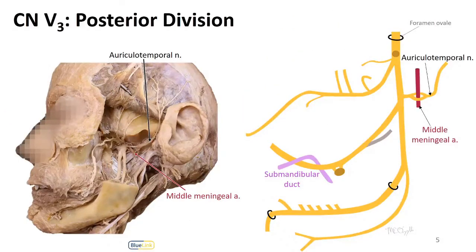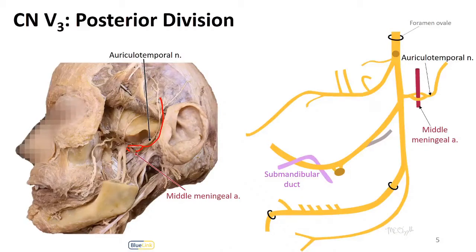Now let's move to the posterior division. One of the first branches off of the posterior division is the auriculotemporal nerve. In the donor, you can see two distinct roots that wrap around the middle meningeal artery and then join together to travel up and around. This nerve, the auriculotemporal nerve, will travel with the superficial temporal artery. Now's a good time to think about when you've heard about the auriculotemporal nerve before — we were talking about the parotid gland, and the postganglionic fibers from cranial nerve 9, glossopharyngeal, will follow in this space. We'll talk about that more in the future.